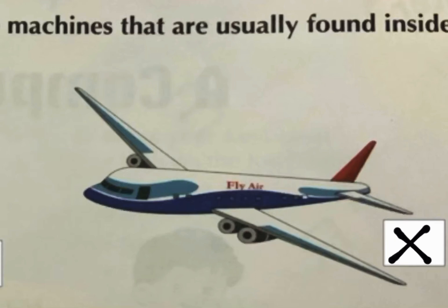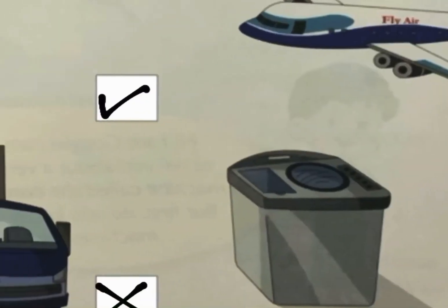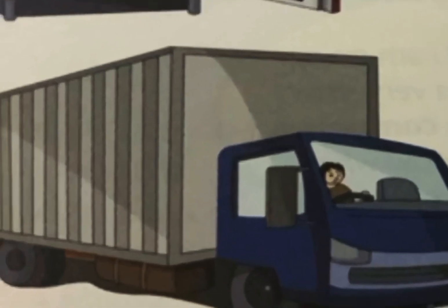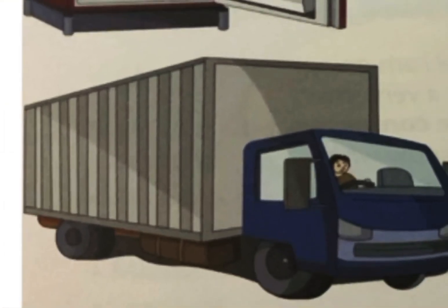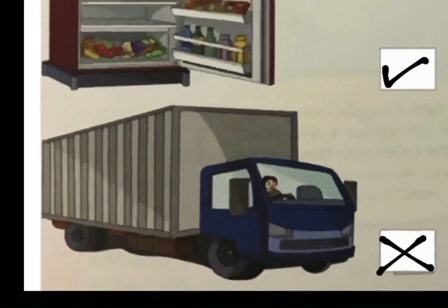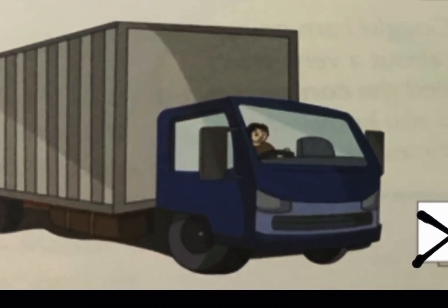Aur tick hame kahan pe lagana hai? Only on those machines that are found inside the house. So, let us see another example. What is it? This is a truck. Truck is usually seen on roads. Jaysay hum travel kertae hain, transportation purposes ke liye, we use this truck to transport our luggage. This is found outside the house. So, we will mark a cross in front of this truck.